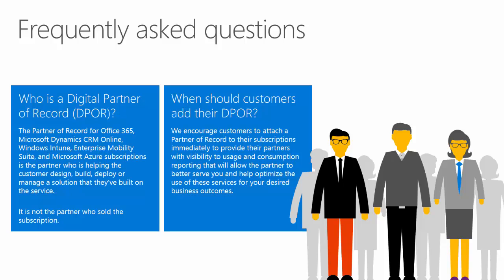Now the reason that we're asking you, the customer, to watch this video and learn how to attach a partner of record is because there's only one role within a tenant or account that actually has access and ability to attach a partner of record. This is the administrator role, also known as the owner.